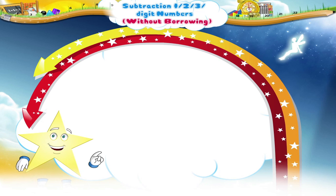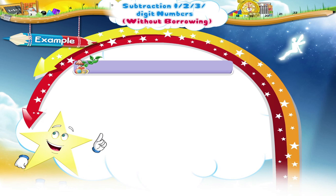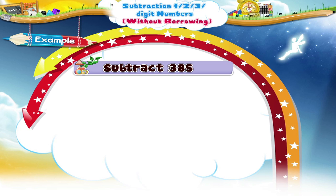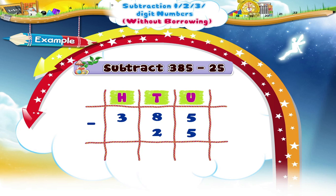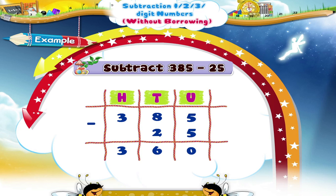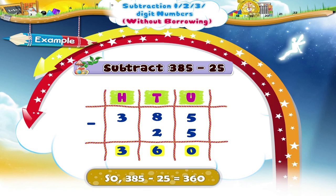Now, let us practice more subtraction: 385 minus 25. 5 units minus 5 units equals 0 units. 8 tens minus 2 tens equals 6 tens. And 3 hundreds is written down as it is. So the answer is 360.